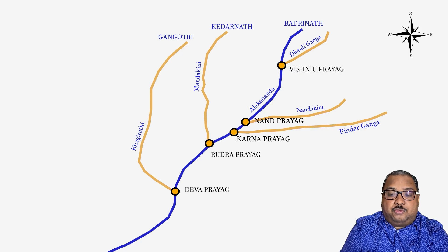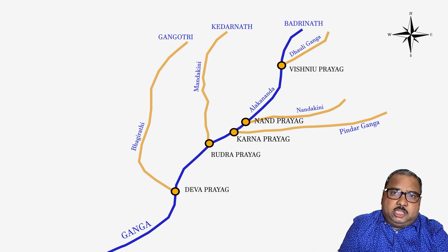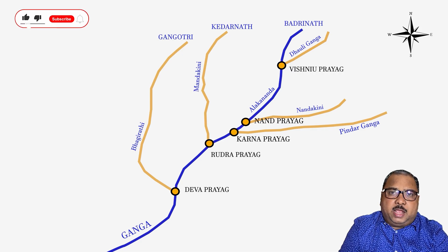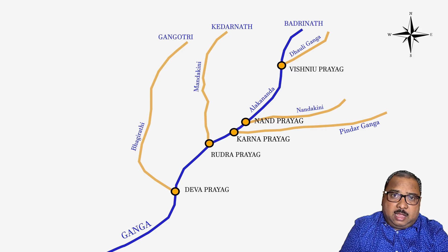Finally, the river Alaknanda meets with Bhagirathi and gives birth to the holy mother river of India, Ganga, which was announced the national river of India in 2008. To summarize the Prayagas: at Vishnu Prayag, Dholi Ganga meets Alaknanda; at Nanda Prayag, Nandakini meets Alaknanda; at Karnaprayag, Pindar meets Alaknanda; at Rudra Prayag, Mandakini meets Alaknanda; and at Devaprayag, Bhagirathi meets Alaknanda.